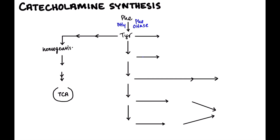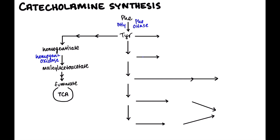You may hear homogentisate referred to as homogentisic acid — pretty much the same thing. Homogentisate then gets broken down into maleoacetoacetate, and that is done by an enzyme called homogentisate oxidase. Then maleoacetoacetate goes through a couple of steps and it ultimately becomes fumarate, and fumarate goes into the TCA cycle where it can be broken down, giving off NADHs and used for energy.